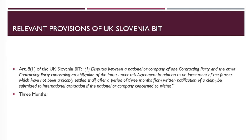Article 8.2 of the BIT states, among other things, that where the dispute is referred to international arbitration, the national or company and the contracting party concerned may agree to refer the dispute either to the ICSID, the additional facility of the ICSID, the Court of Arbitration of the ICC (International Chamber of Commerce), an international arbitrator, or an ad hoc arbitration under the UNCITRAL Arbitration Rules. Article 8.2 goes on to say that if, after a period of three months from the written notification of the claim, there is no agreement on one of the above alternative procedures, the dispute shall, at a request in writing of the national or company concerned, be submitted to arbitration under the UNCITRAL Arbitration Rules. The parties to the dispute may agree in writing to modify these rules.